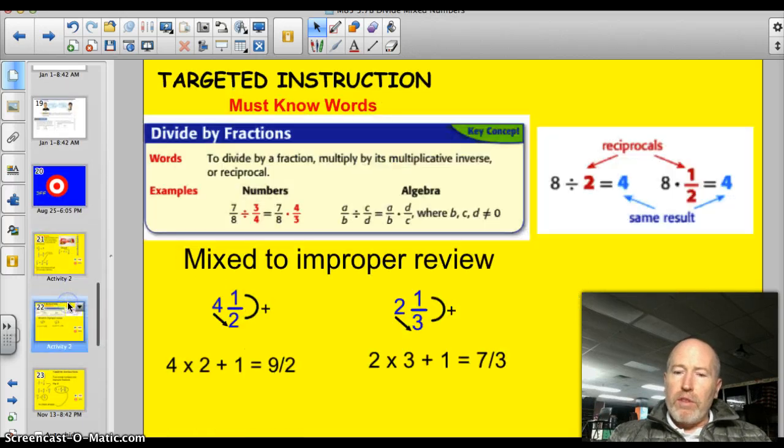Let's take a quick review of some vocabulary words here. When you divide by fractions, you're going to multiply by its multiplicative inverse or its reciprocal. And, we talked about that. How 7/8 divided by 3/4 can be solved by taking 7/8 times 4/3. Take a look at these two. Multiplicative inverse. And here's a reciprocal problem over here. 8 divided by 2 equals 4. Being the same as 8 times the reciprocal of 2, which is 1/2. Also equals 4.